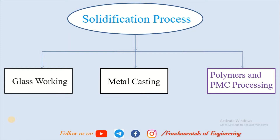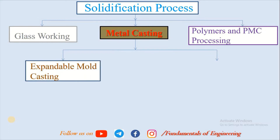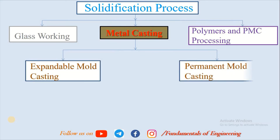In glass working, glass manufactured products can be heated and blow molded, and all the shapes we get with glass molds. Today we are focusing on the metal casting process. Metal casting is broadly divided into two processes: one is expandable mold casting, and another is permanent mold casting.